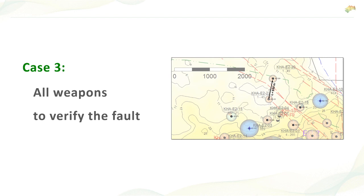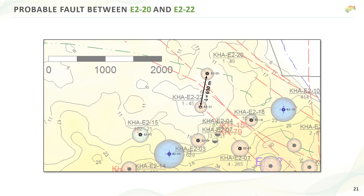Case three: I call it 'all weapons to verify the faults.' One of our clients is developing a large carbonate field with many faults visible on seismic, but they're not confident whether these faults are transparent or sealing. The question is whether a particular fault crossing the field splits it into compartments. The client has two wells — well 22 and well 20 — one on each side of the fault, with a whole history of downhole pressure for both, and wants us to confirm if the fault is sealing.